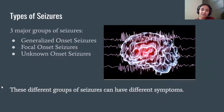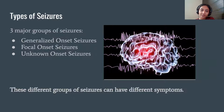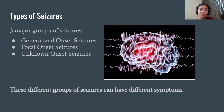What are the different types of seizures? There are three major groups we're going to be talking about today. The first group is generalized onset seizures. These seizures affect both sides of the brain or groups of cells on both sides of the brain at the same time. The next group is focal onset seizures, which can start in one region of the brain and then spread to the rest, and the term is generally used to talk about where the seizures begin.